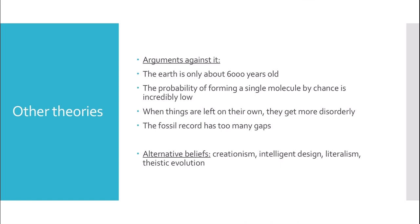There are arguments against evolution. First, that the Earth is only about 6,000 years old. Second, that the probability of forming a single molecule by chance is incredibly low — relating to the early Earth's environment. Third, that when things are left on their own they become more disorderly, suggesting species couldn't have evolved with no direction. The most important argument used against the out-of-Africa hypothesis is that the fossil record has too many gaps.